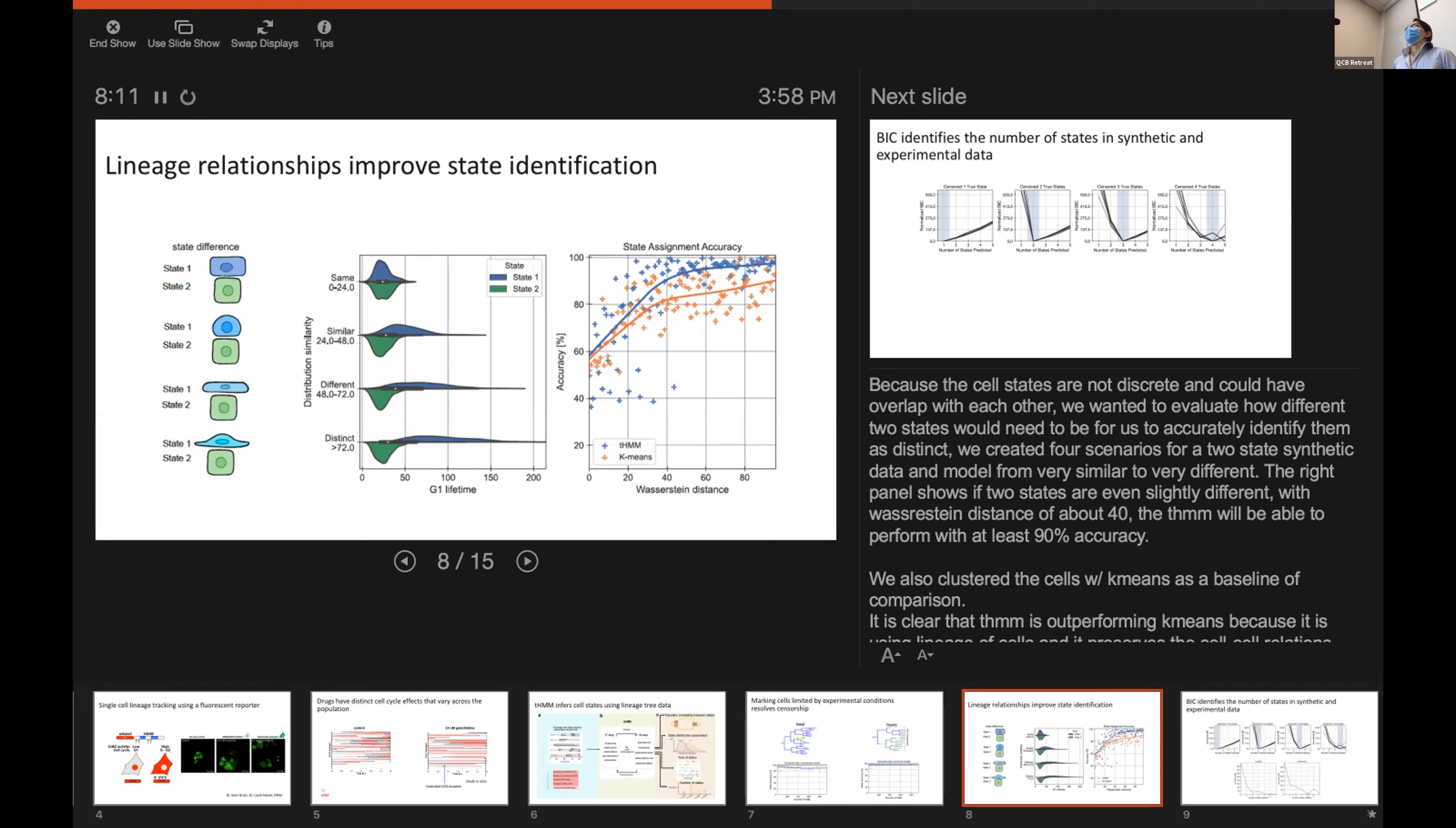We also clustered cells using k-means as our baseline. So, here we can see that our model is always being better than k-means because it's considering the relationship between the cells.